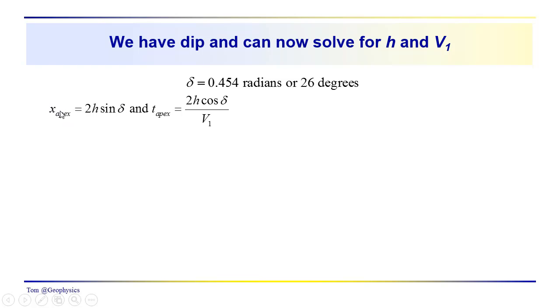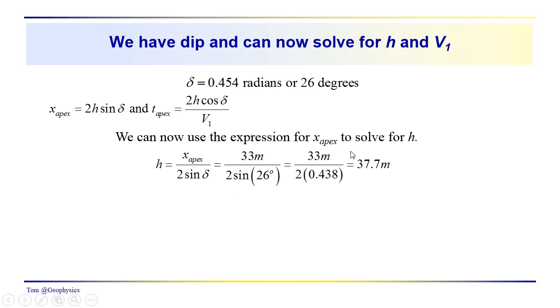x is already, we know what x is, we know what delta is. We can calculate h. h then is just equal to x apex over 2 sine delta. Using the numbers that I came up with, we have 33 meters over 2 times the sine of delta. And I obtained 37.7 meters.